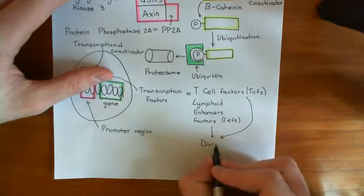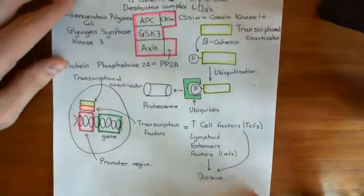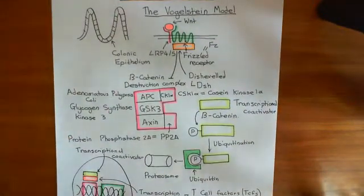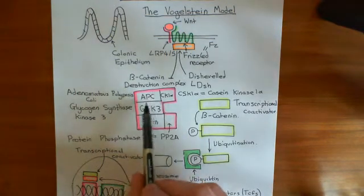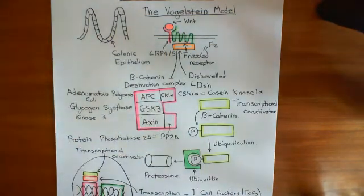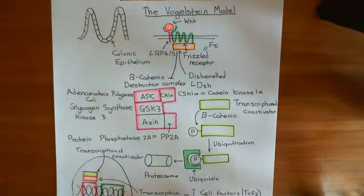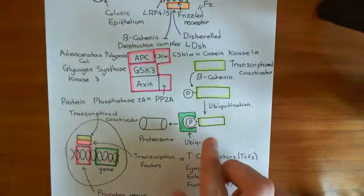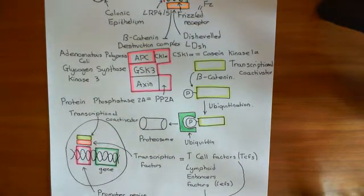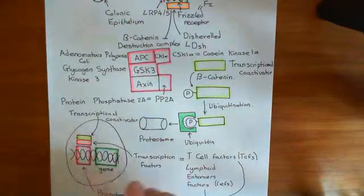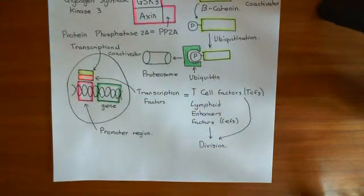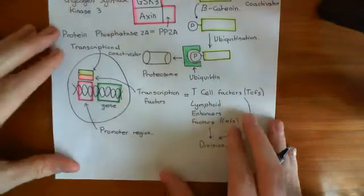That's overall what Wnt does. Now, in the Vogelstein model we have a mutation in adenomatous polyposis coli, or APC. If we lost all function of APC, you wouldn't be able to make any functional beta-catenin destruction complexes anymore, so beta-catenin would not be phosphorylated, not be ubiquitinated, and not be destroyed. Beta-catenin would rise within the cytoplasm and then bind to TCFs and LEFs, increasing expression of genes that move the cell from interphase into G1 phase of the cell cycle.